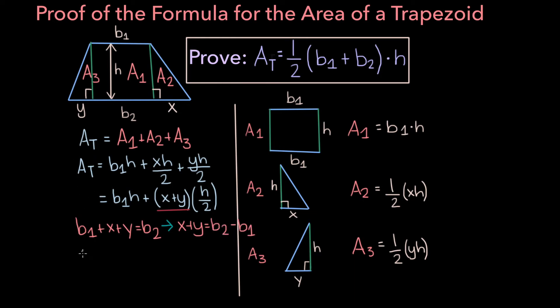Now we can plug this back into our formula for AT. So AT is equal to b1h plus b2 minus b1 times h over 2.